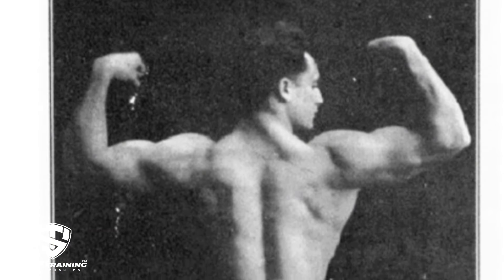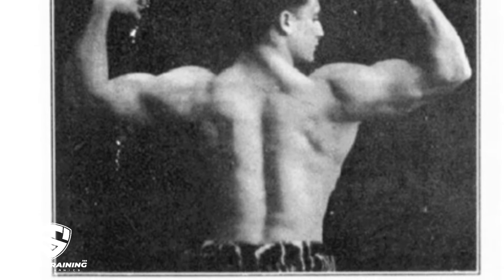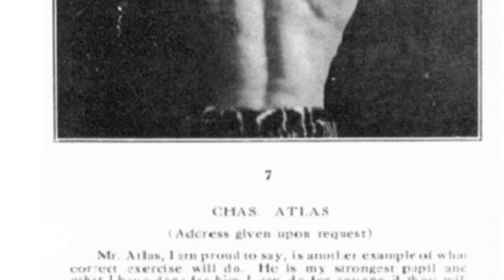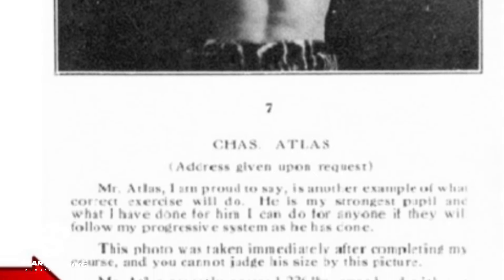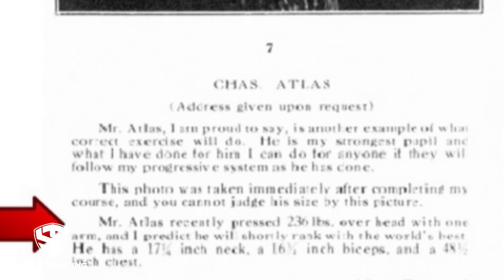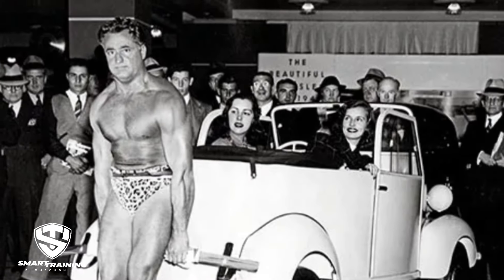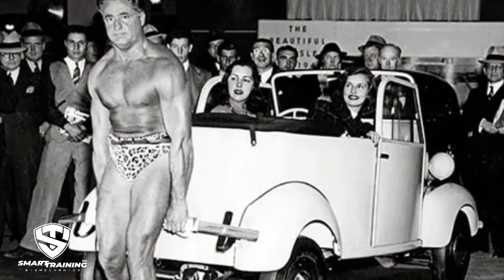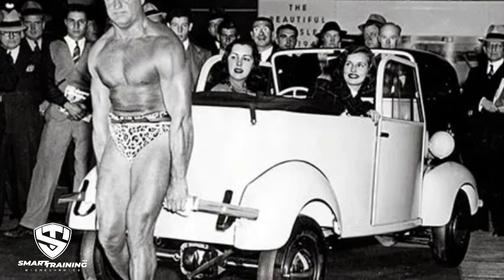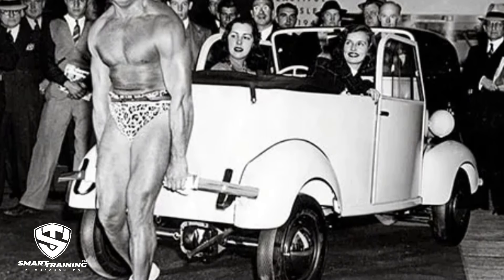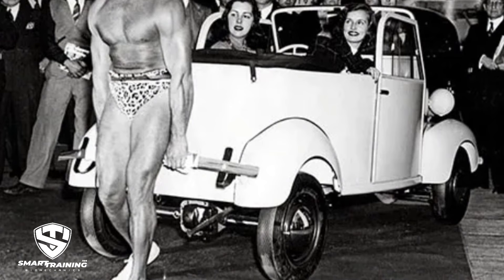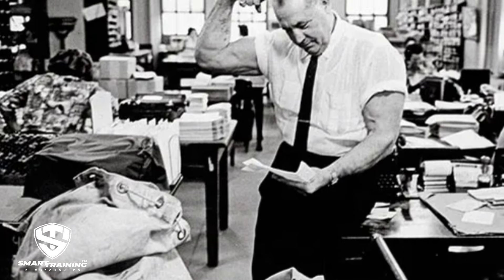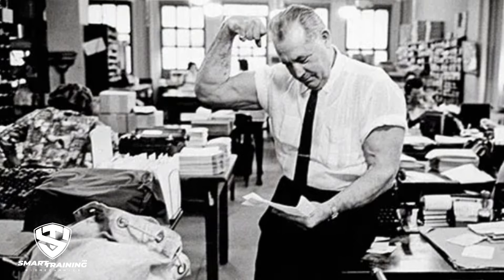The exercises involved pressing or pulling against immovable objects — for example, the wall, the floor, or their own opposing force. The advertisement featured a cartoon showing a scrawny man on the beach bullied by a larger, more muscular man. The scrawny man then buys the Dynamic Tension course and, after only 15 minutes a day, miraculously transforms himself into a muscular he-man, returns to the beach, and punches the bully in the face.